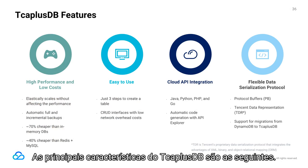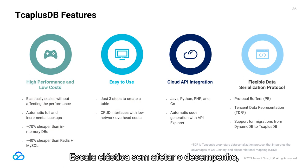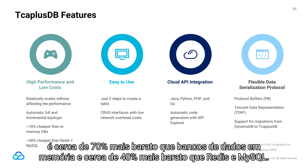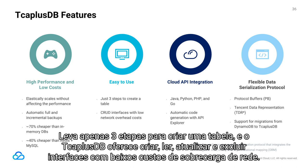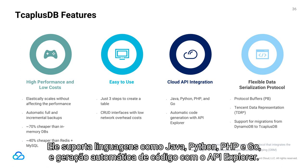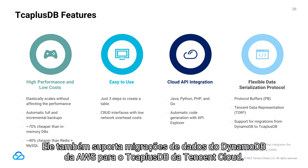TCAP Plus DB can finish preparing for 1 million PCUs within 1 hour and features fast exchange for hot and cold data with RAM and SSD, 99.999% availability, tens of millions of queries per second at scale with average latency under 5 milliseconds, and an automatic free backup service with prices 30 to 50% lower than competitors. Its main features include: high performance and low cost — elastically scaling without affecting performance, about 70% cheaper than in-memory databases and about 40% cheaper than Redis and MySQL. It is easy to use, taking just three steps to create a table, with CRUD interfaces at low network overhead. It supports cloud API integration with languages such as Java, Python, PHP, and Go, and supports a flexible data serialization protocol called Tencent Data Representation using protocol buffers, as well as data migrations from AWS DynamoDB.